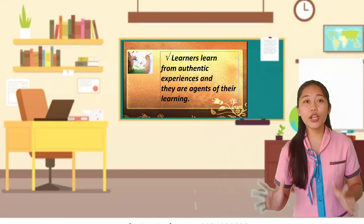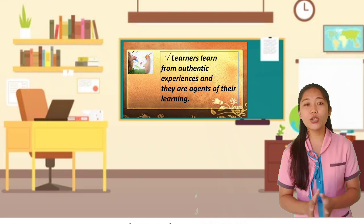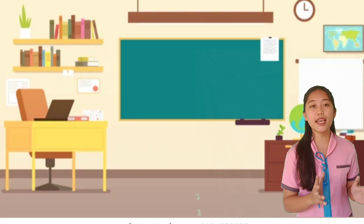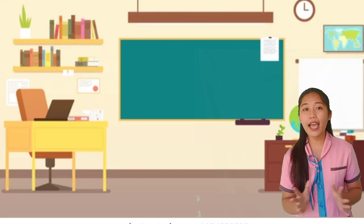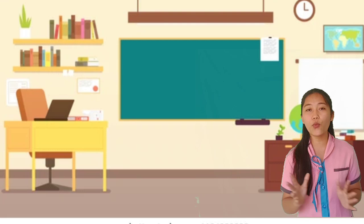And next, learners learn from authentic experience and they are agents of their learning. John Locke believes that learners learn from authentic experiences and they are actively agents of their learning. They make their own lives, they are responsible for their learning and they live the life that they want. That was the belief of John Locke.